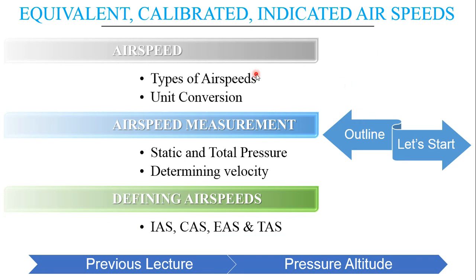Now let's get an outline of this session. We will be knowing about the types of airspeeds and unit conversion under the topic airspeeds. Next we will move on to the measurement technique of airspeeds — we will know about static and total pressure. We will determine the velocity and derive the equation used to determine airspeed. Then we will define the types of airspeeds: indicated, calibrated, equivalent, and true airspeed.